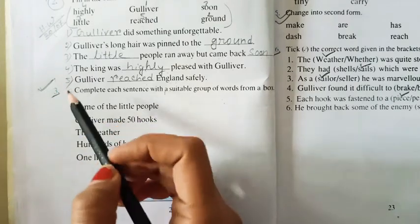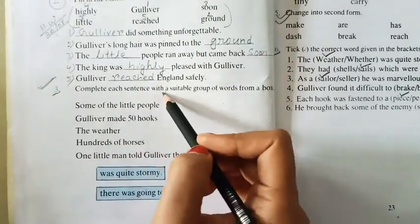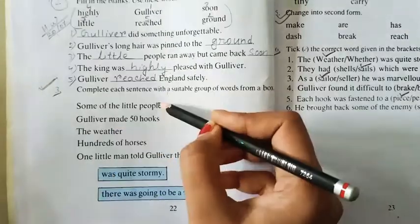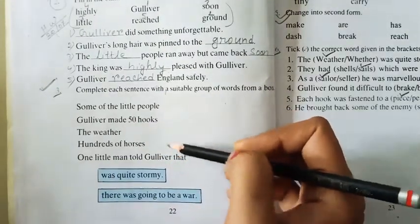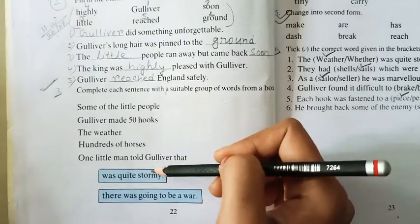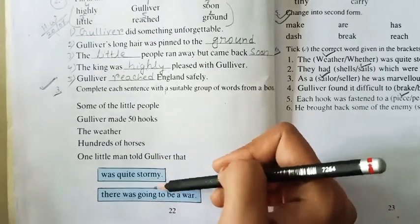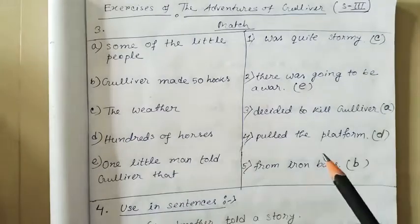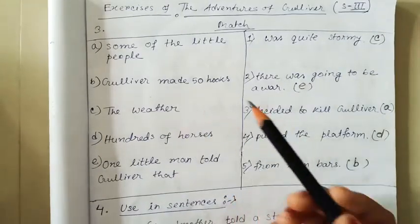Number 3. Complete each sentence with a suitable group of words from a box. Look, there are some incomplete sentences. We have to make them complete with the help of the given words in the boxes. Write this question like this. Then match these sentences.